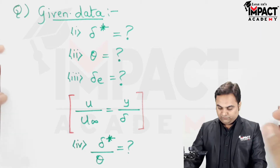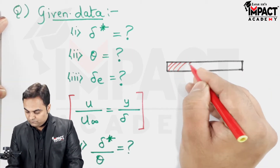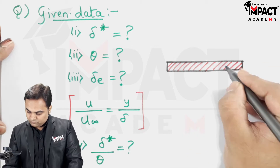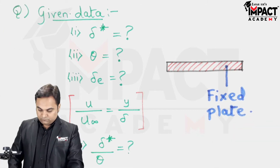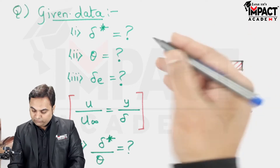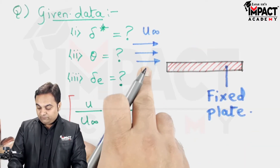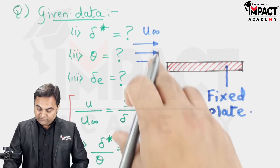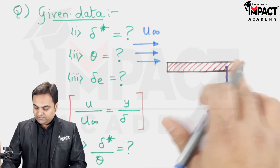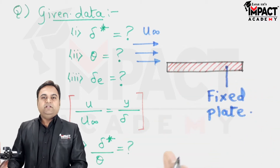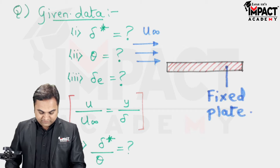First I'll explain the physical meaning of this problem. If there is a fixed plate, a fluid flows over it with velocity u∞. Since this is laminar flow, the fluid flows in layers. The layer in contact with the fixed plate has velocity zero, because the plate is fixed with zero velocity, and this gives us what is called the velocity profile.